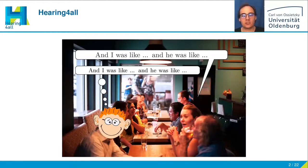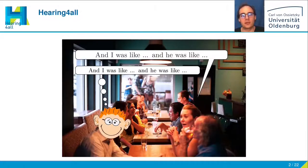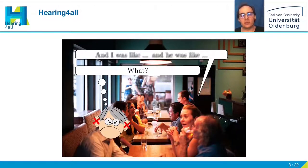When you're sitting in a restaurant and talking with your friends and family, you typically do not have any problems to understand them, so you can socially interact with them. People with hearing impairment face a more difficult challenge since they do not understand everything that is being said, so they cannot socially interact with the others.